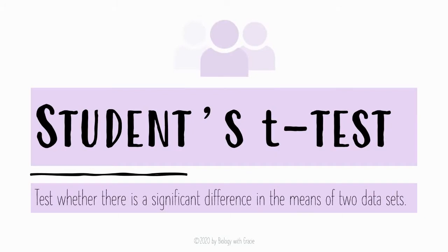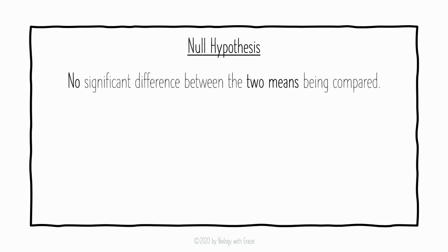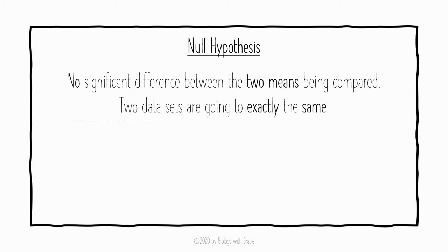In today's video we're going to be looking at the Student's t-test. This test is used to see whether there is a significant difference between the means of two data sets. In terms of the Student's t-test, the null hypothesis refers to the lack of significant difference between the two means being compared — essentially we expect the two data sets to be exactly the same.